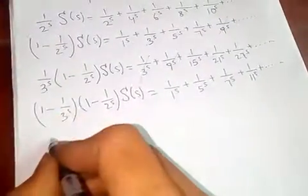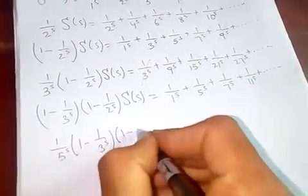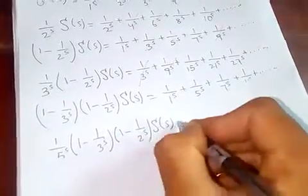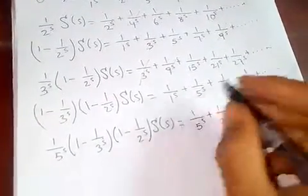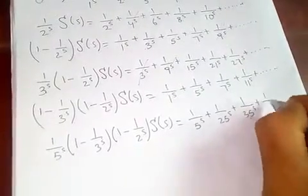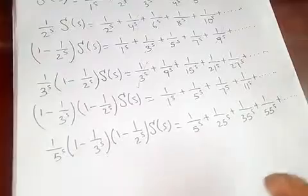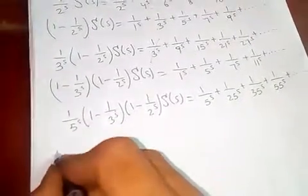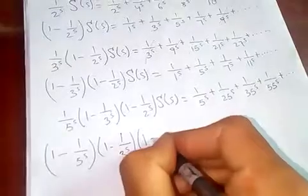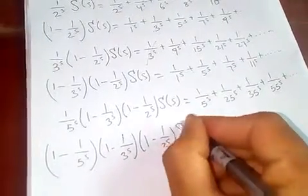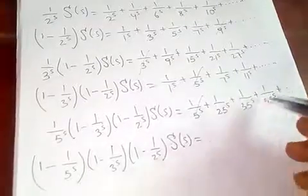Same thing again: if I multiply both sides by 1 over 5 to the s, then 1 over 5 to the s times 1 minus 1 over 3 to the s times 1 minus 1 over 2 to the s times zeta of s is equal to 1 over 5s plus 1 over 25s plus 1 over 55s, and so on. Now let's subtract this from this again: 1 minus 1 over 5 to the s, times 1 minus 1 over 3 to the s, times 1 minus 1 over 2 to the s times zeta of s. We cancel 5, 25, 35, 55, and other multiples of 5.